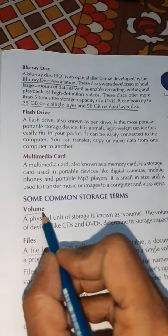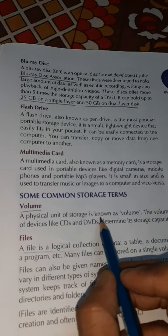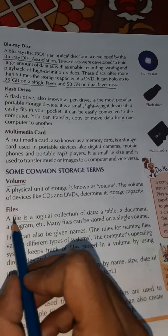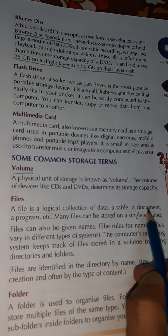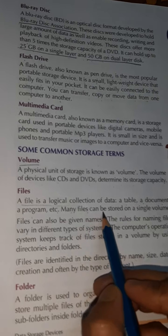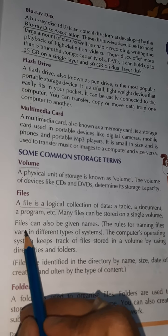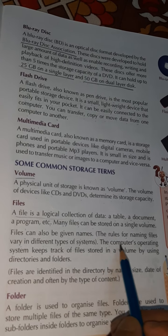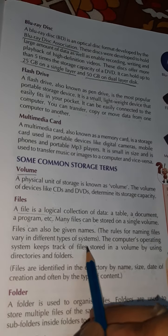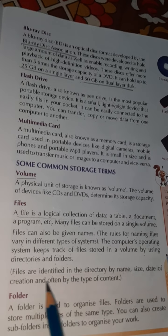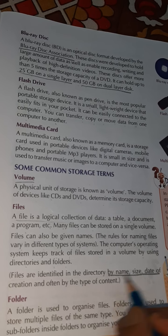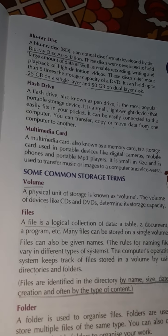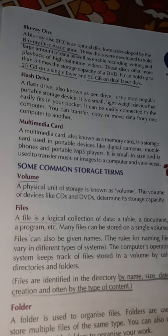Some common storage terms: Volume — a physical unit of storage is known as a volume. The volume of devices like CDs and DVDs determines their storage capacity. Files — a file is a logical collection of data, such as a table, a document, or a program. Many files can be stored on a single volume. Files can be given names, and the rules for naming files vary across different operating systems. The computer operating system keeps track of files stored in a volume using directories and folders. Files are identified in a directory by name, size, date of creation, and often by the type of content.